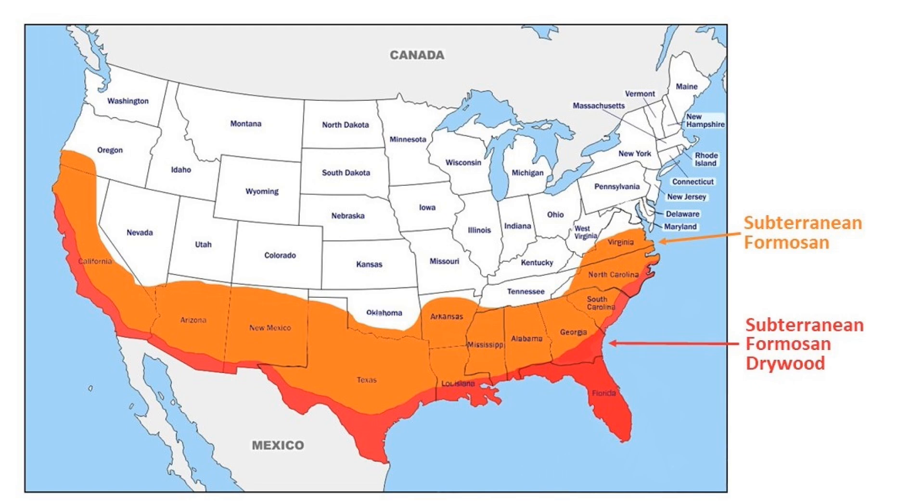Let's talk about subterranean termites first, because they account for something like 90% of all the termite damage in the United States, and most of the time this is the type of termite you are probably going to be dealing with. If you live in a northern state, I'm going to make this super easy for you. I've created a map based on my own research. If you live outside of the red and orange areas on the map, there is a very high probability that you have plain vanilla subterranean termites that are very easily treated. The most common of these are Eastern subterranean termites.